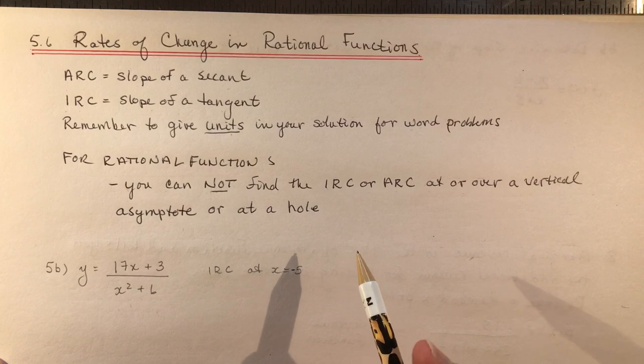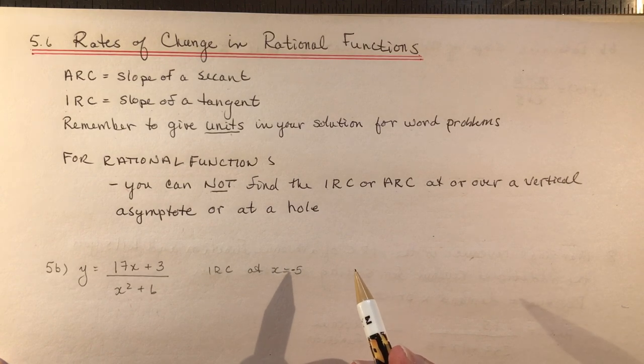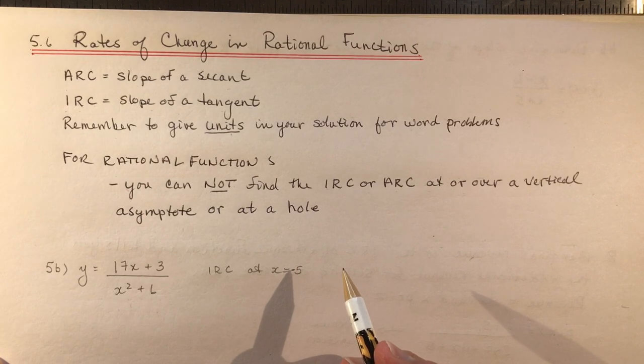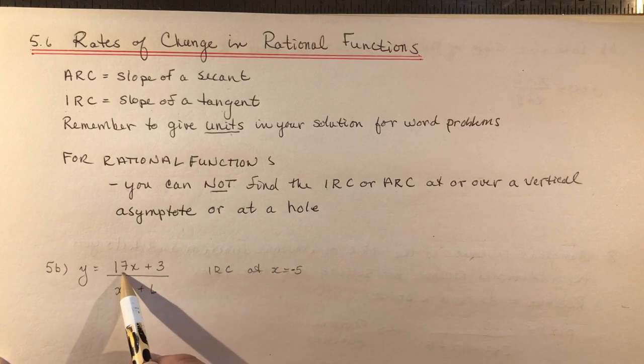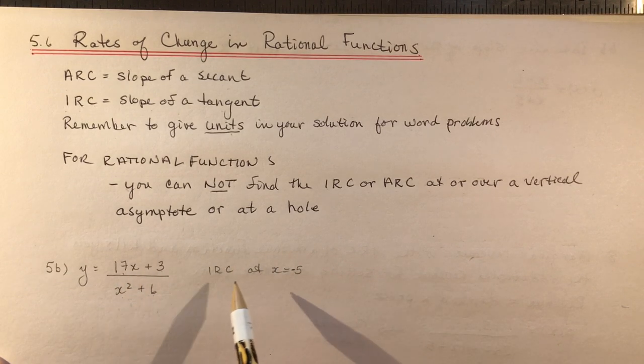So I'm going to do some questions from your textbook. Number 5 is to select a strategy to estimate the instantaneous rate of change at each function at the given point. So we're going to do 5b.